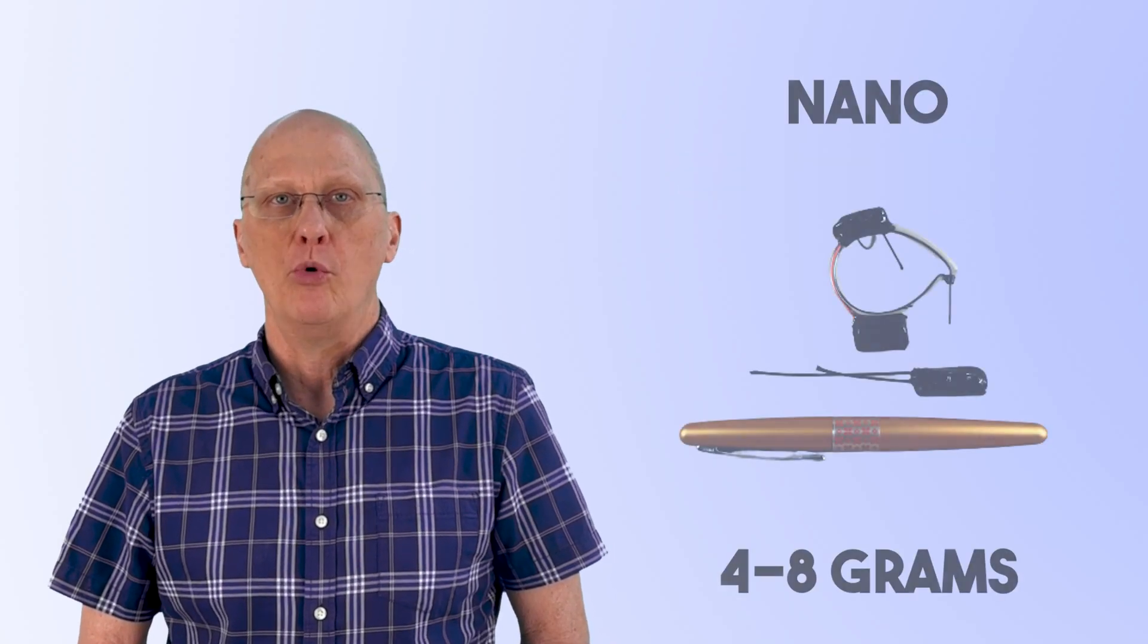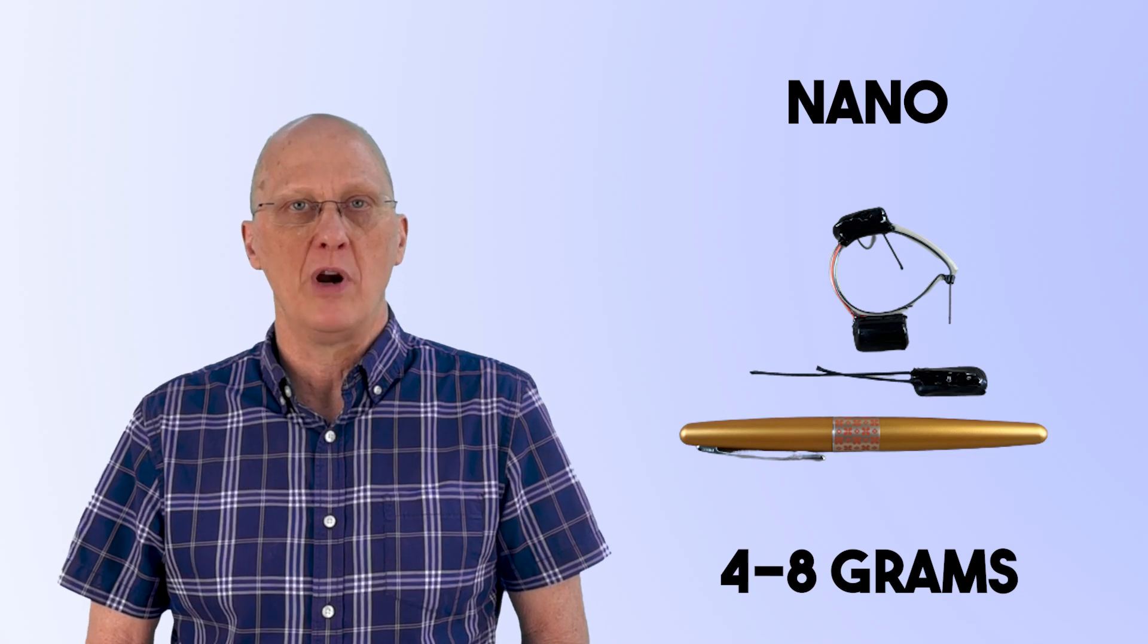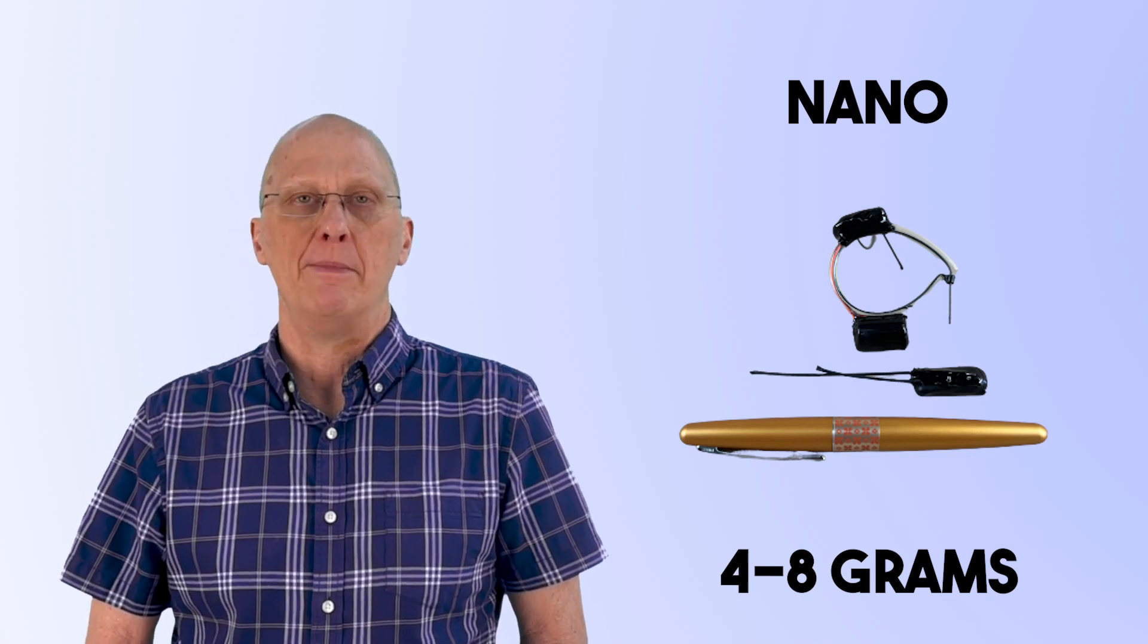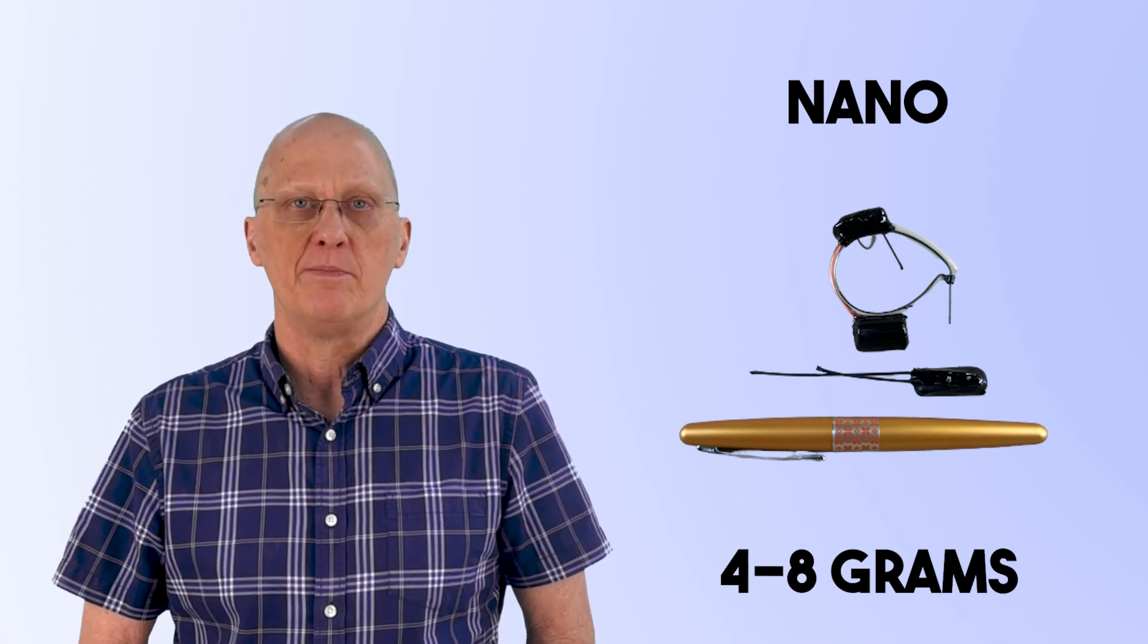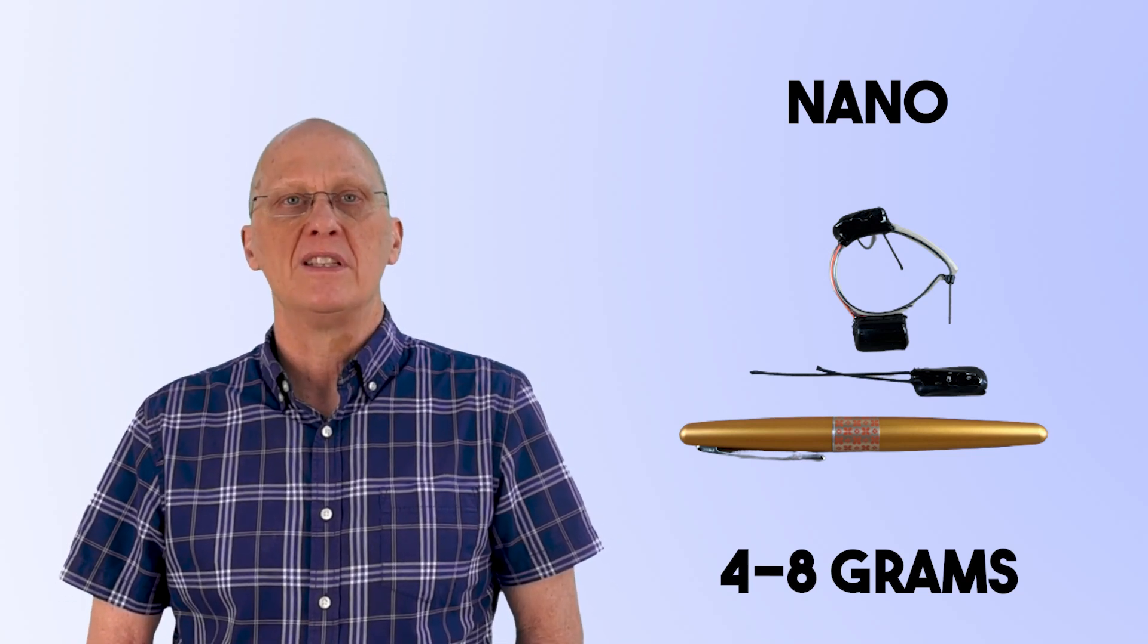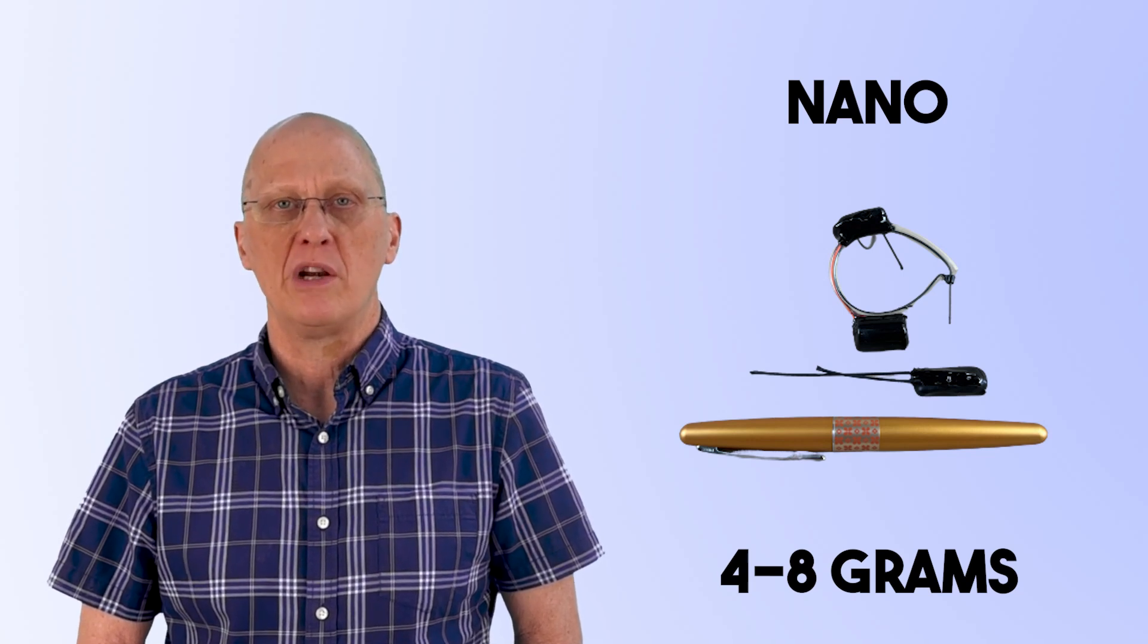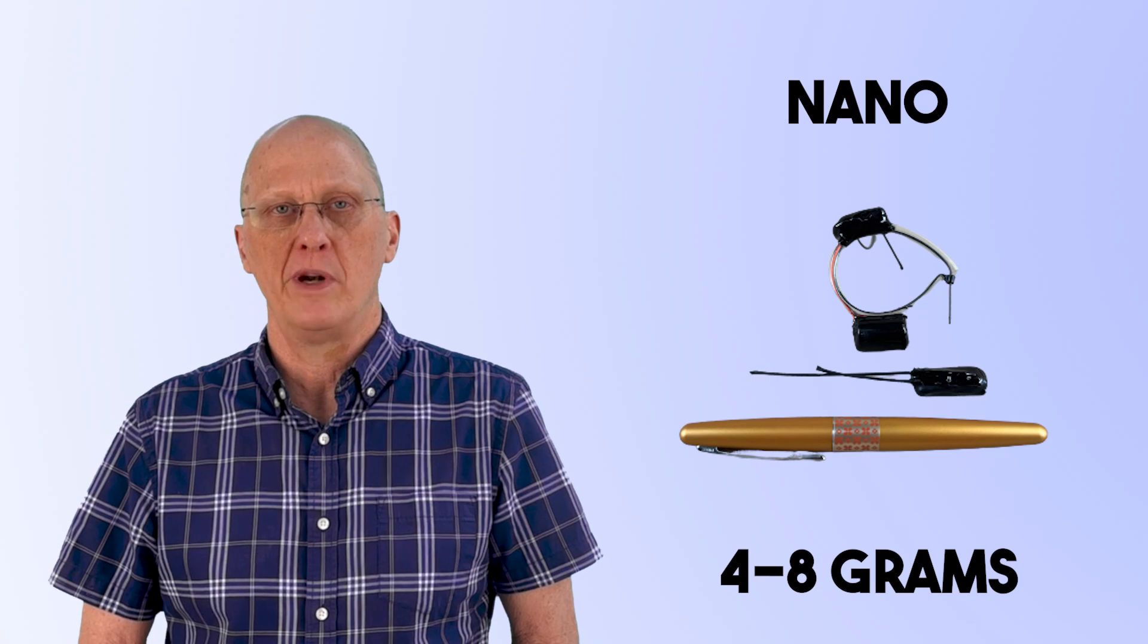This is just our starting point. Use the Nano when you need a small GPS device in the 4-8 gram range and have a fairly open habitat. Data download is by automatic, long-range UHF transceiver. The Nano is not a good choice for dense habitats. Battery life is generally short but could be as much as 3 months.